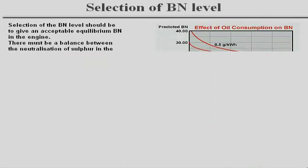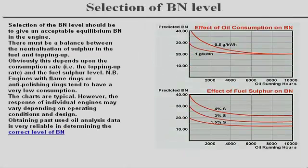Selection of the correct BN level should give an acceptable equilibrium BN in the engine. There must be a balance between the neutralisation of sulphur in the fuel and topping up. Note that engines with flame rings or anti-polishing rings tend to have a very low oil consumption.